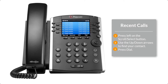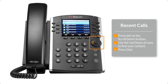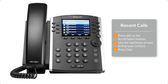To check your recent calls, press left on the scroll select button. From there, you can use the up-down arrows on the scroll select button to navigate to the contact you would like to call. Then press dial.